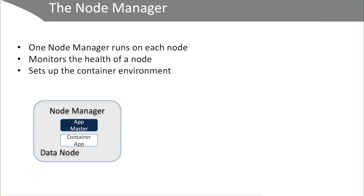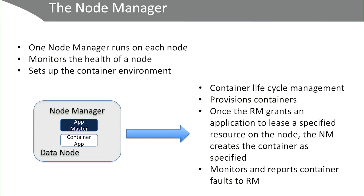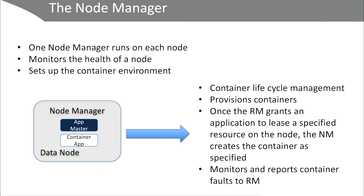The third major component of Yarn is the Node Manager, which runs on every single node and communicates with the app master. He monitors the overall health of the node, sets up the container environment, and communicates back to the RM to report the node's health — including CPU cycles, data storage, clock cycles, and security tokens. If a node manager starts to experience performance issues, that needs to be communicated back to the RM so that future scheduled jobs don't go to that node. The node manager creates the application's container based on its lease and the container launch context, or CLC, based on information from the app master.